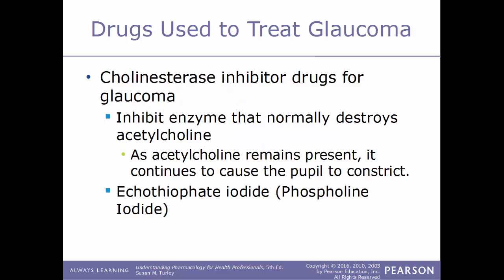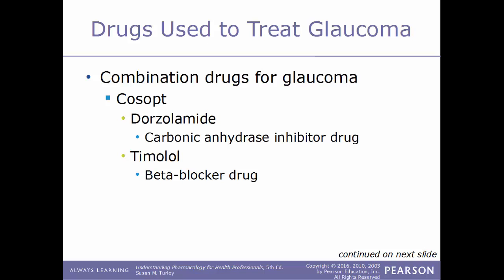Another class of drugs used to treat glaucoma are cholinesterase inhibitor drugs. Cholinesterase normally destroys acetylcholine, so by inhibiting it, acetylcholine is able to remain present and prolong the effect of constricting the pupil. An example is echothiophate iodide, sold under the name Phospholine Iodide. It's also common to see combination drugs for glaucoma — for example, Cosopt is a combination of dorzolamide, a carbonic anhydrase inhibitor, and timolol, a beta blocker drug.